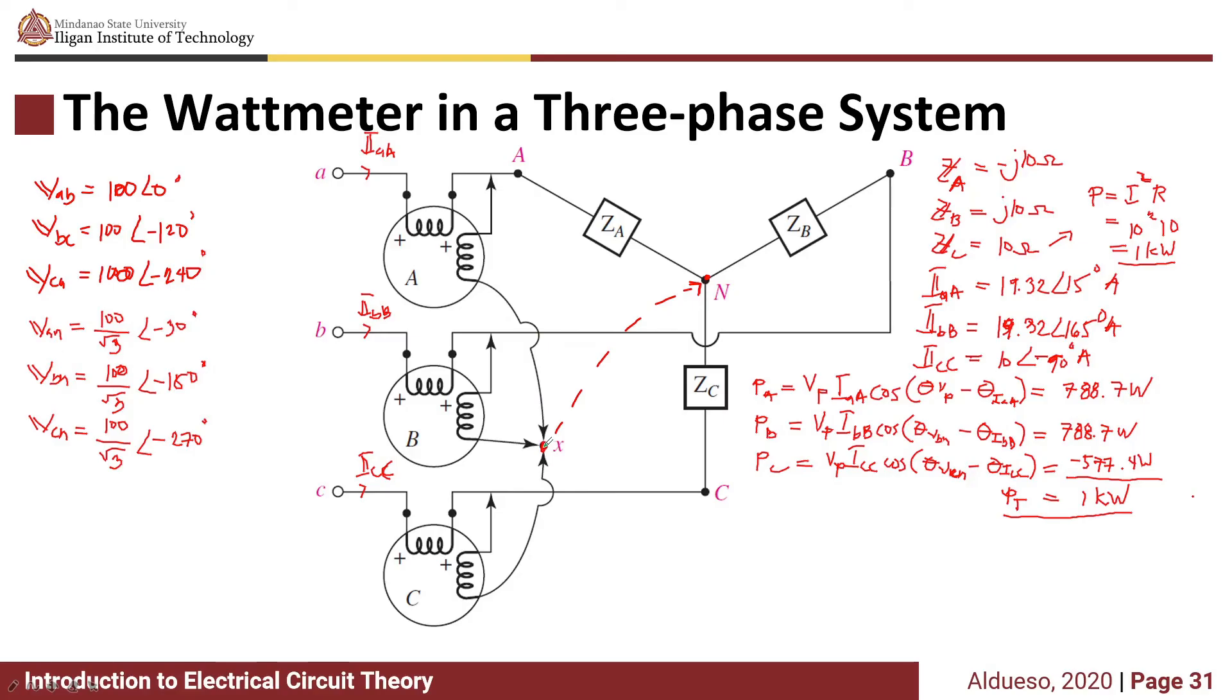Now let's consider connecting point X at phase B. The voltage measured by wattmeter B is equal to 0 since it is just shorted, so power B equals 0.